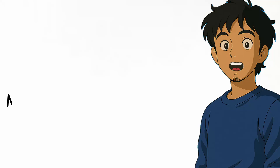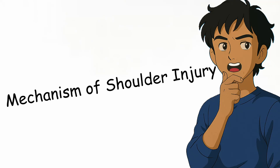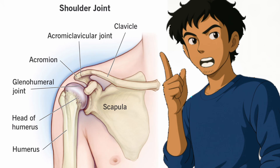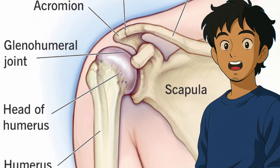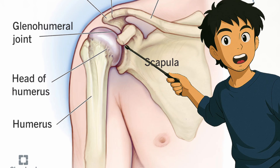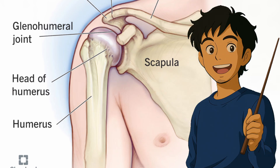First, we will be talking about the mechanism of shoulder injury. To understand this, we need to know a little about the anatomy of the shoulder. The shoulder is also called the glenohumeral joint — 'gleno' refers to the glenoid cavity, and 'humeral' refers to the humerus, the bone present in the arm.